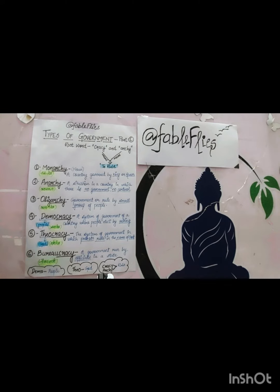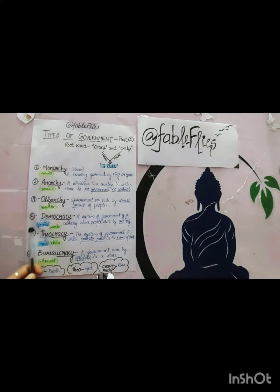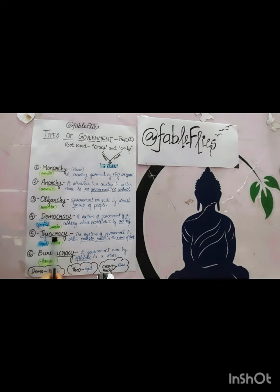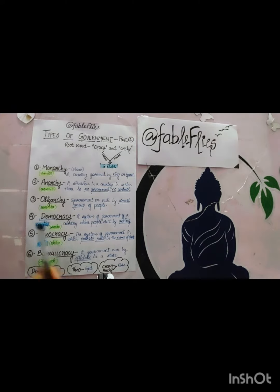Theocracy — here again we have a new root word: 'theo', which means god. So what is theocracy? It is the system of government in which priests rule in the name of god. That is theocracy.